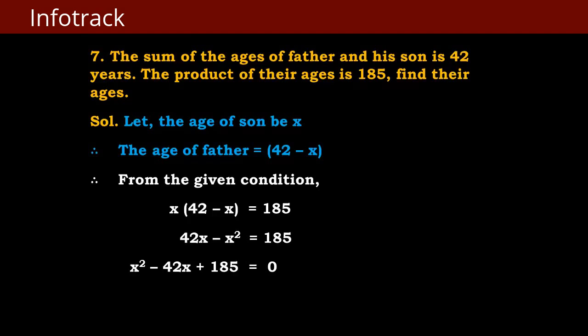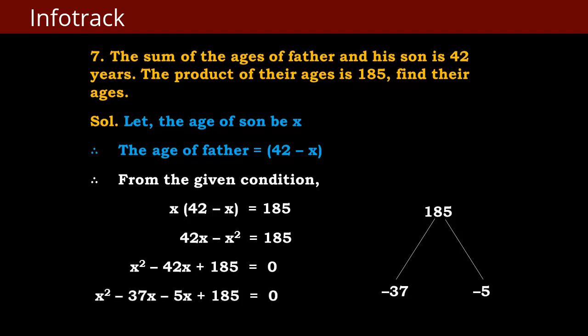Now we need to take factors of plus 185 so that their addition becomes minus 42. The factors are minus 37 and minus 5. So we write: x square minus 37x minus 5x plus 185 equals 0. Making groups of two: from the first two terms take x common, and from the next two terms take minus 5 common.